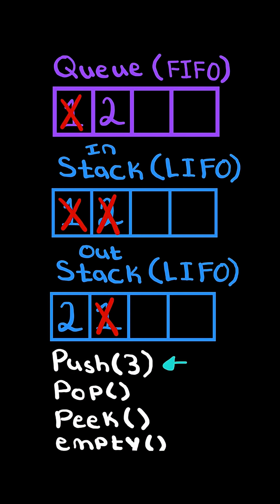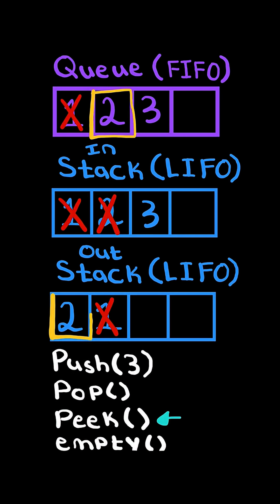Now let's do another push operation — we push three onto the in-stack. Then we apply a peek operation. For a queue we return the first element, and similarly we return the last element in the out-stack.